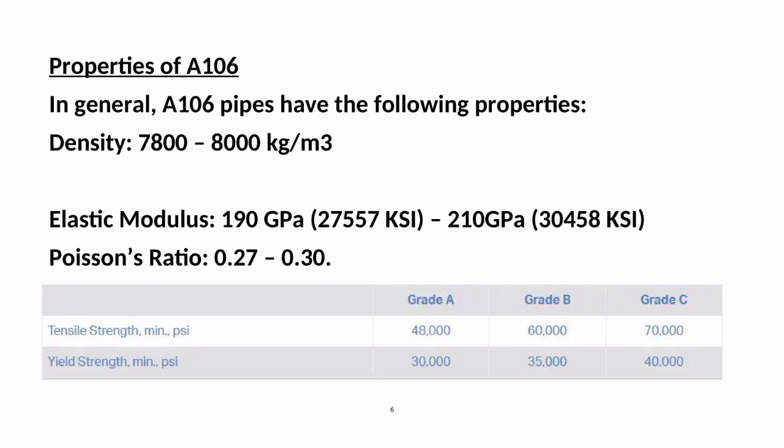Properties of A-106: In general, A-106 pipes have the following properties. Density: 7,808 kg per cubic meter. Elastic modulus: 190 GPa (27,557 KSI) to 210 GPa (30,458 KSI). Poisson's ratio: 0.27 to 0.30.